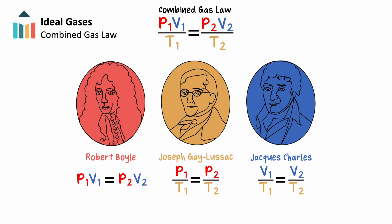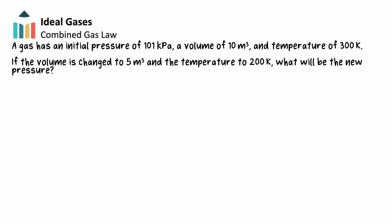Let's say for example, you have a gas with an initial pressure of 101 kilopascals, a volume of 10 meters cubed, and a temperature of 300 Kelvin. If the volume of this gas is changed to 5 meters cubed and its temperature to 200 Kelvin, what would be the gas's new pressure?